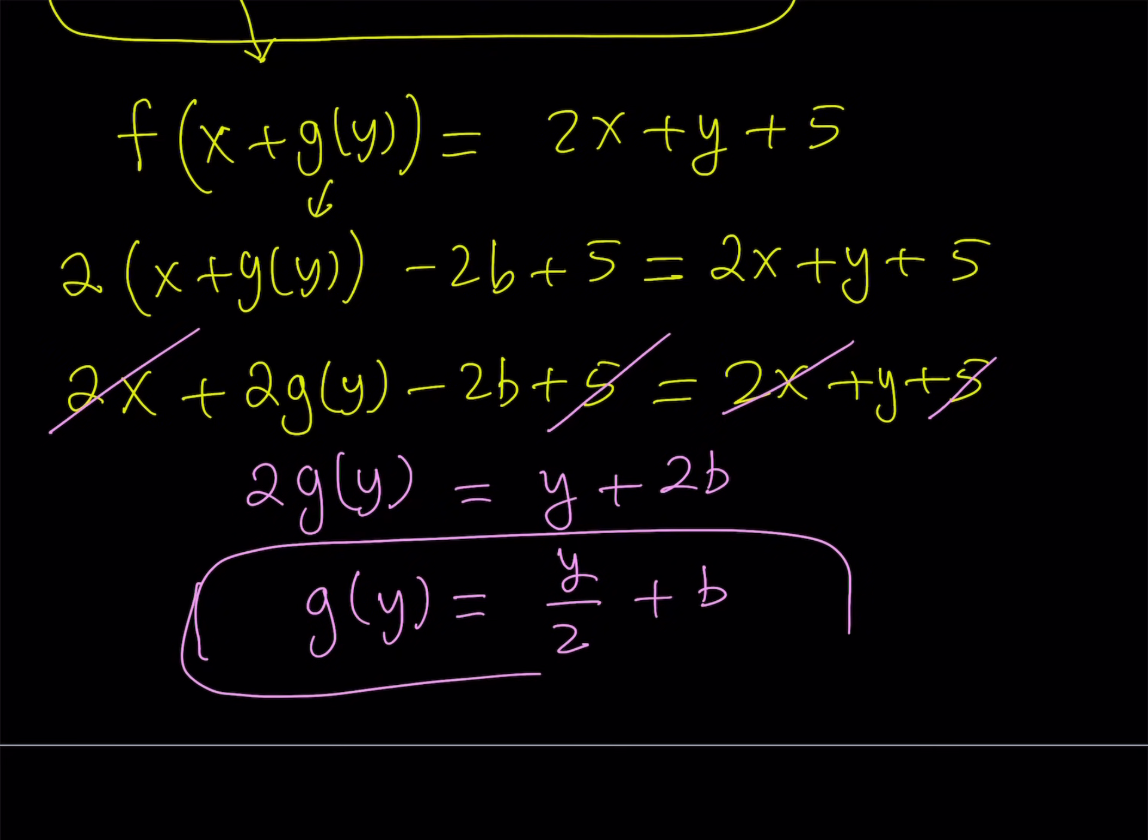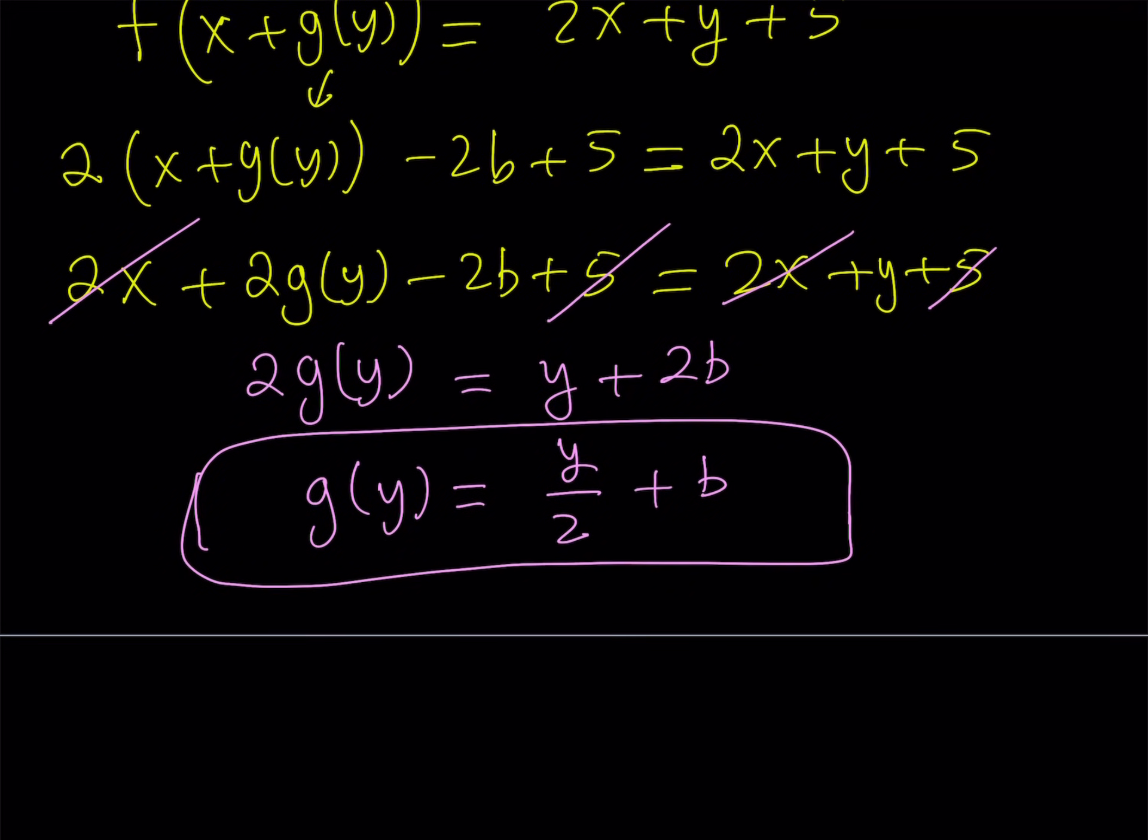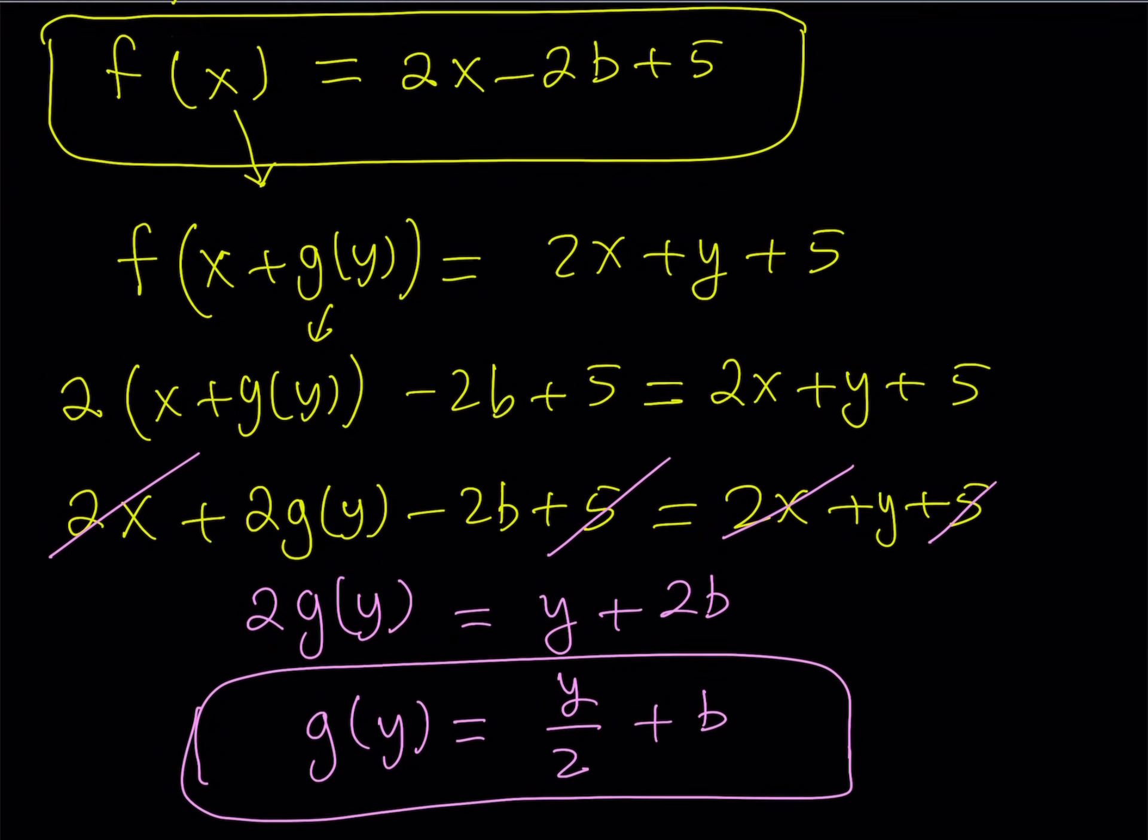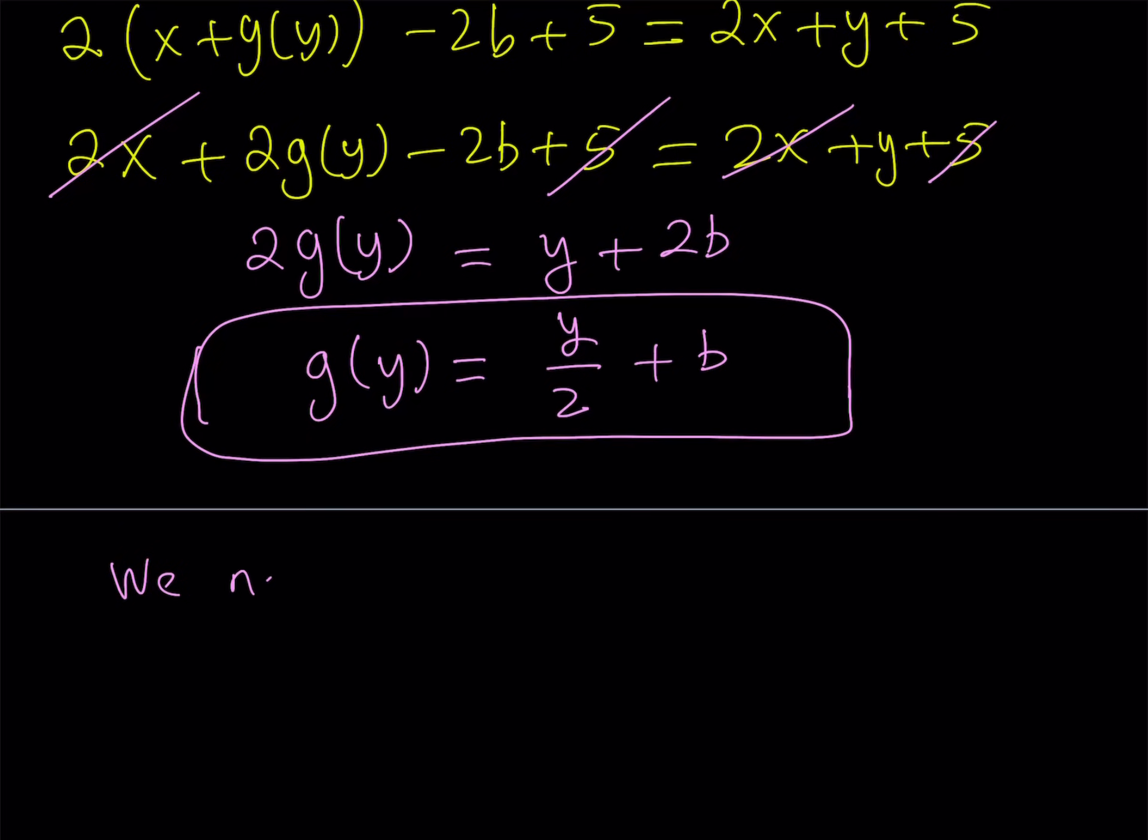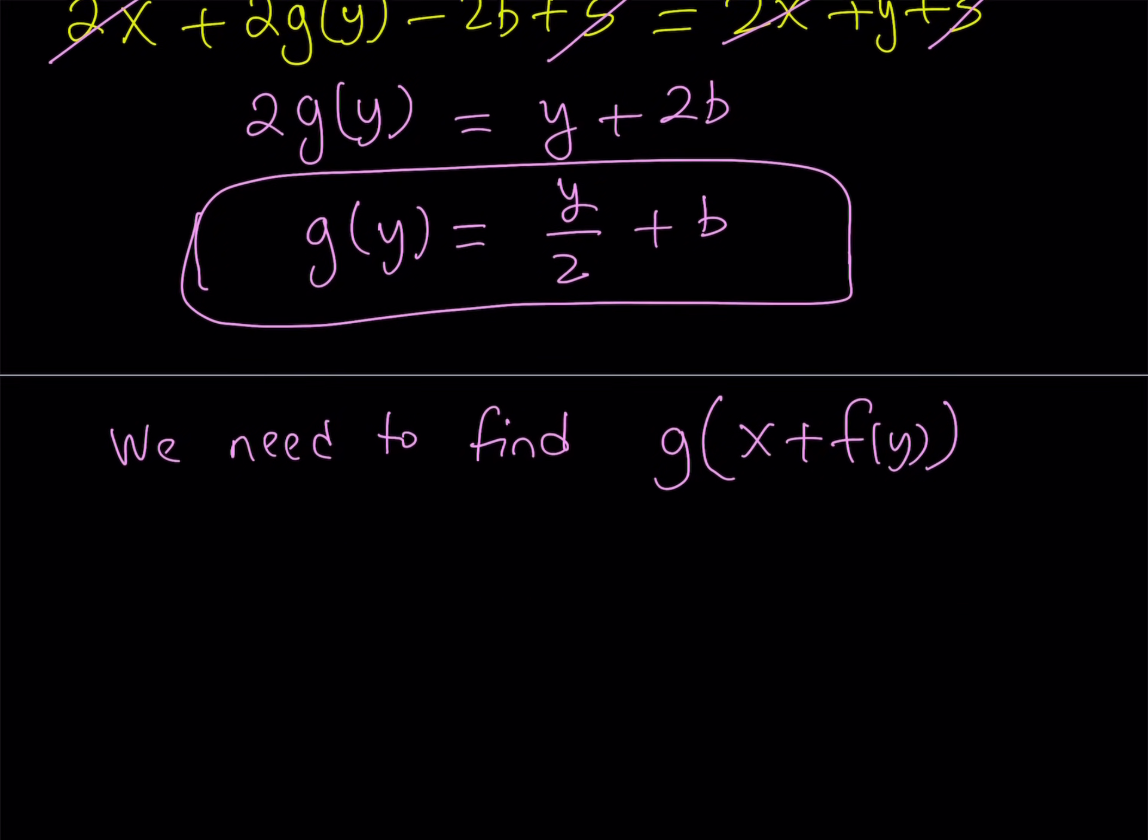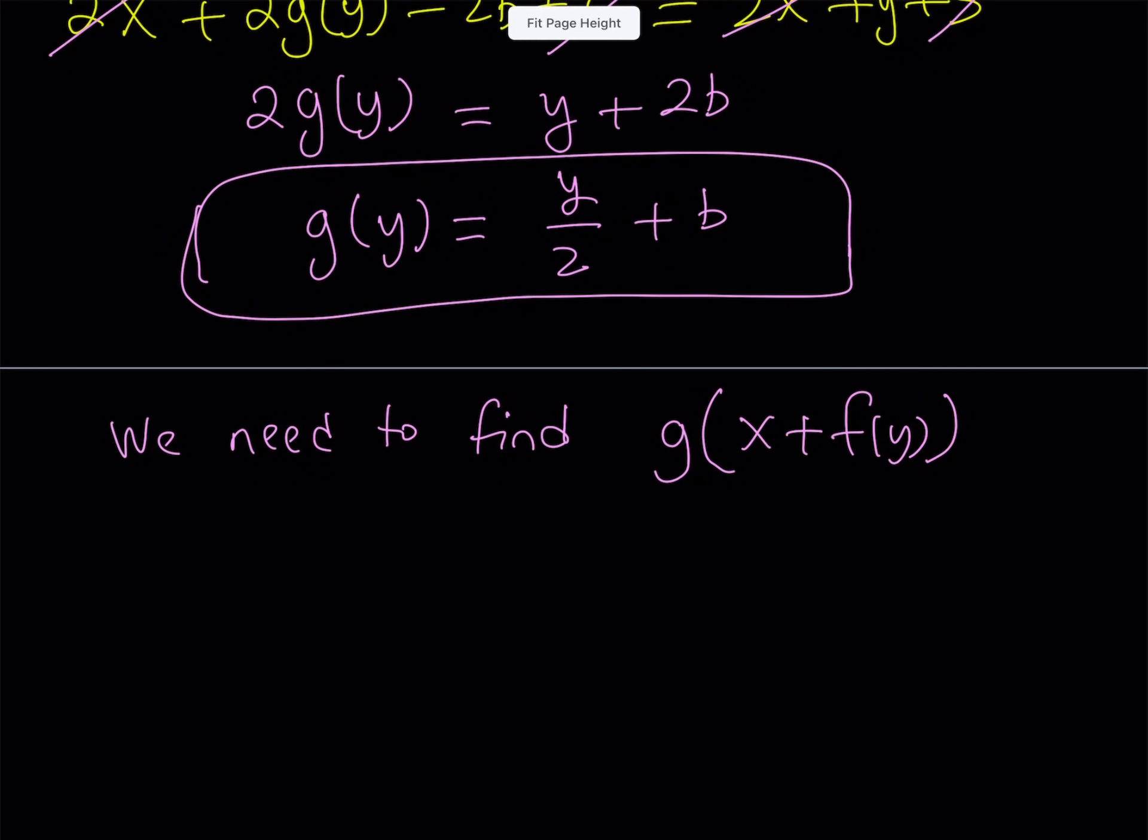This is the expression for g of y. And what am I going to do from here? So let's go ahead and take a look at what we have. We have an expression for f of x. We do have an expression for g of y. Now, what are we supposed to find? We are supposed to find the value of g of x plus f of y. We're supposed to find an expression for this, but how do you find it? Let's go ahead and write it down by using the definition of g. We have that g of y equals y over 2 plus b. So how do you evaluate something like this? Well, you've got to replace y with x plus f of y in here.